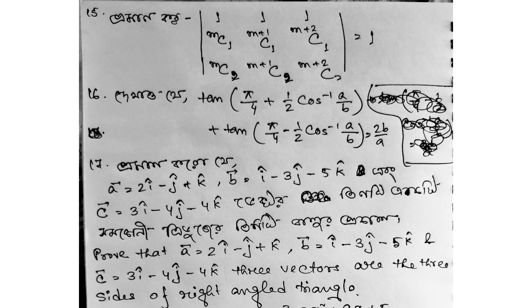Next question: Prove that tan into pi by 4 plus 1 by 2 cos inverse a by b plus tan pi by 4 minus 1 by 2 cos inverse a by b equals 2b by a.